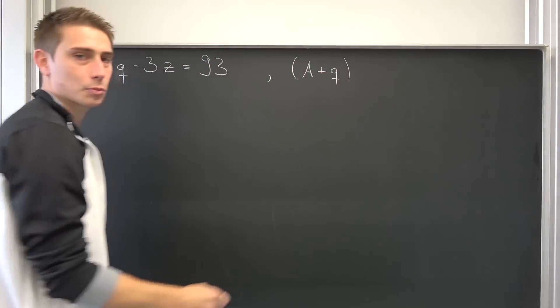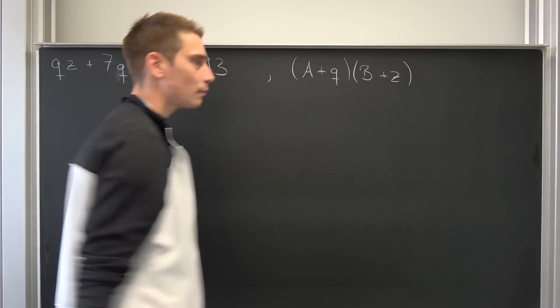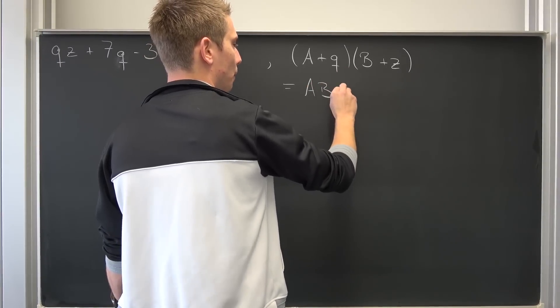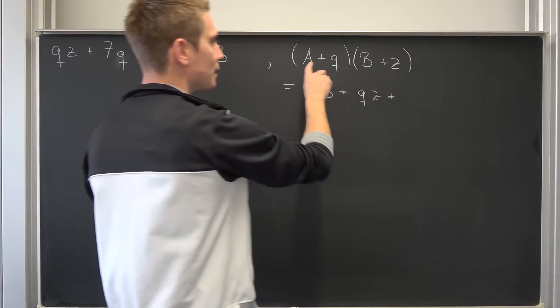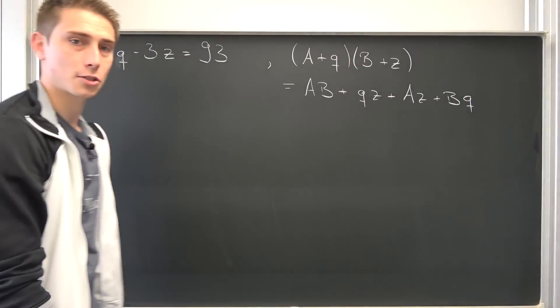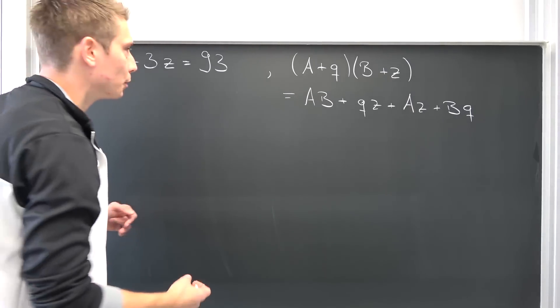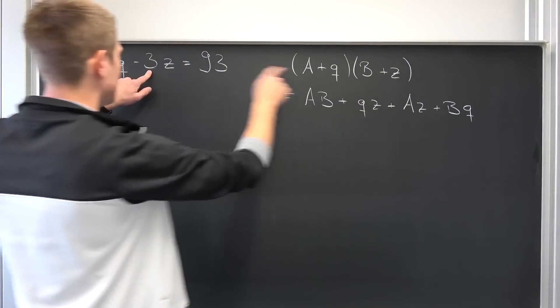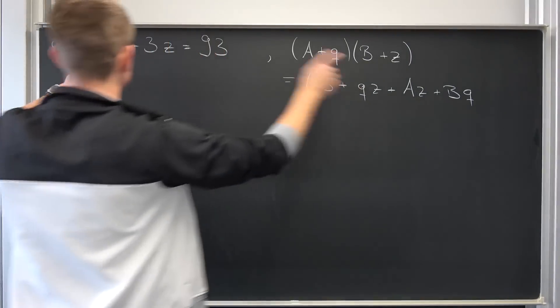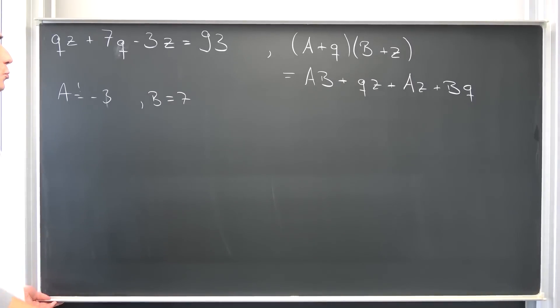Let's take a look at (A + q) times (B + z). We can start to factor stuff out. This is going to result in A times B plus q times z plus Az plus Bq. Now we can start to find out some restrictions. This is a Diophantine equation and we have coefficients given. It's just like with polynomial. We need our A to be equal to negative 3. Also we need our B to be equal to 7. Meaning overall A times B is going to result in negative 21.